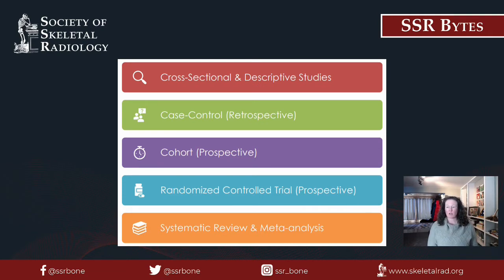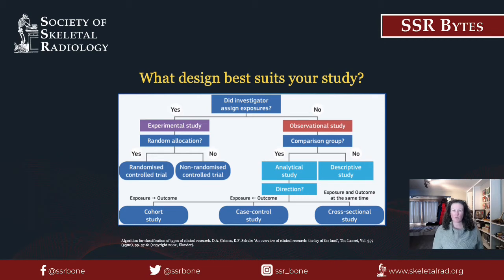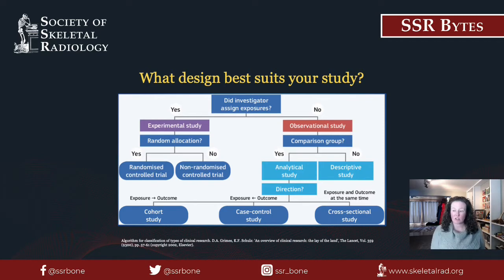The first thing we're going to review is how you identify a study design. The first question in this flowchart asks whether an investigator assigned the exposure. This term 'exposure' can apply to an intervention, a treatment process, or an educational seminar — really just something that affects the patients or population being studied. If the exposure is assigned, then we know we're dealing with an experimental study. If the exposure is not assigned, then we know we're dealing with an observational study, like most of the studies listed on the previous slide.